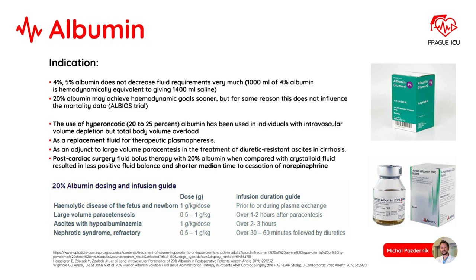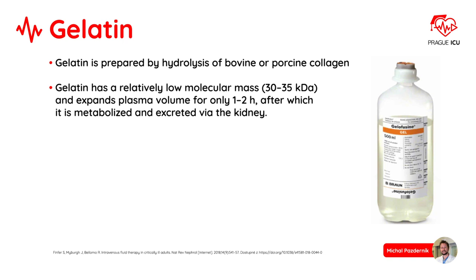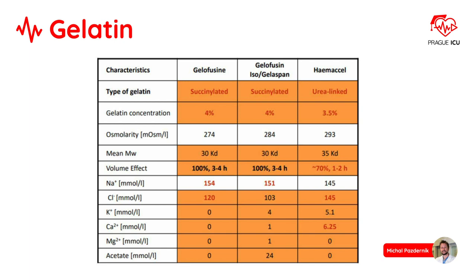Gelatin is prepared by hydrolysis of bovine or porcine collagen. Gelatin has a relatively low molecular mass and expands plasma volume for only 1–2 hours, after which it is metabolized and excreted via the kidney. In this table, you can appreciate the content of three main gelatins used in ICU.